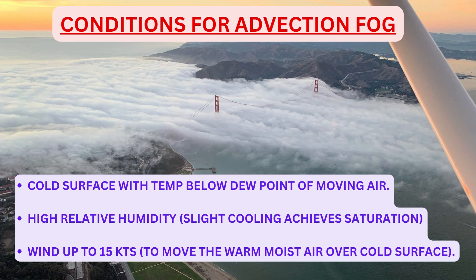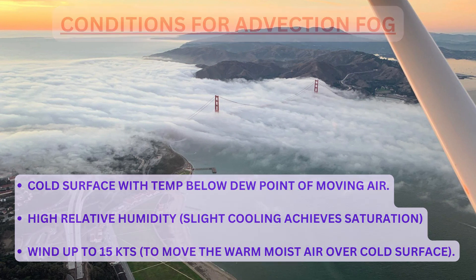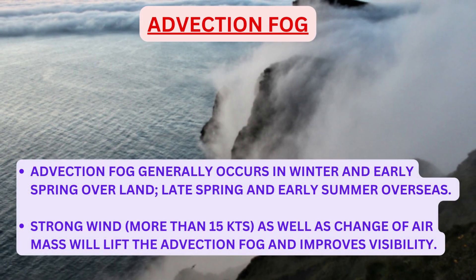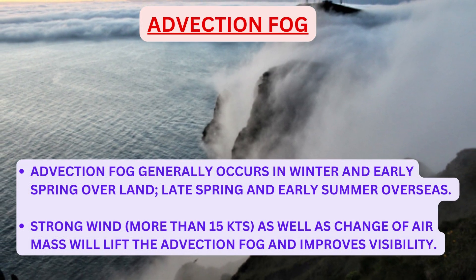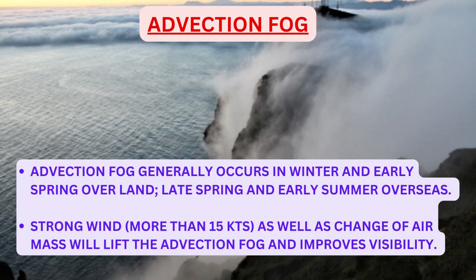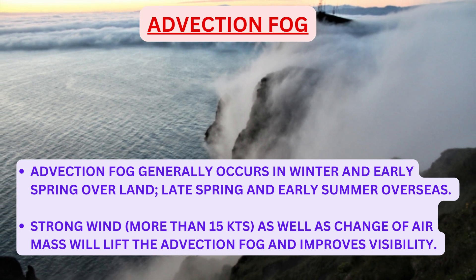The third condition for advection fog is winds up to 15 knots, required to move warm moist air over the cold surface. Advection fog generally occurs in winter and early spring over land, and late spring and early summer over sea. Strong winds of more than 15 knots, as well as a change of air mass, will lift the advection fog and improve visibility.